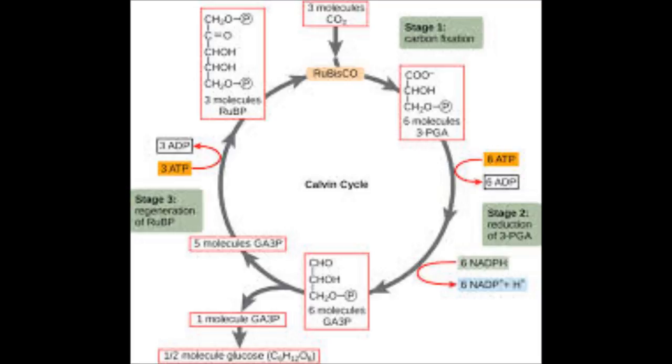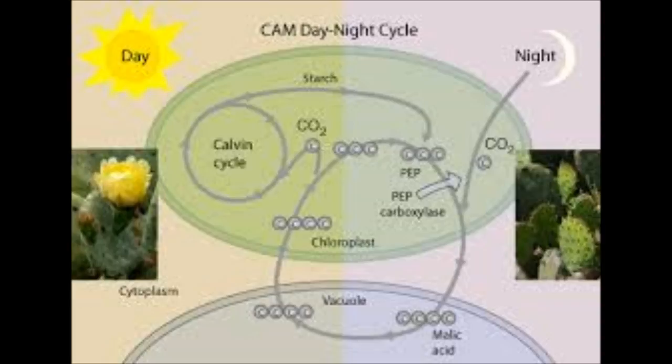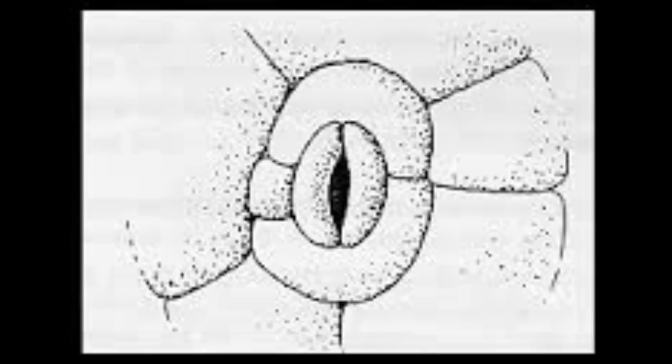The Calvin cycle is the most common path for carbon fixation, and it is named for Melvin Calvin. Alternate pathways include the C4 path and the CAM pathway.